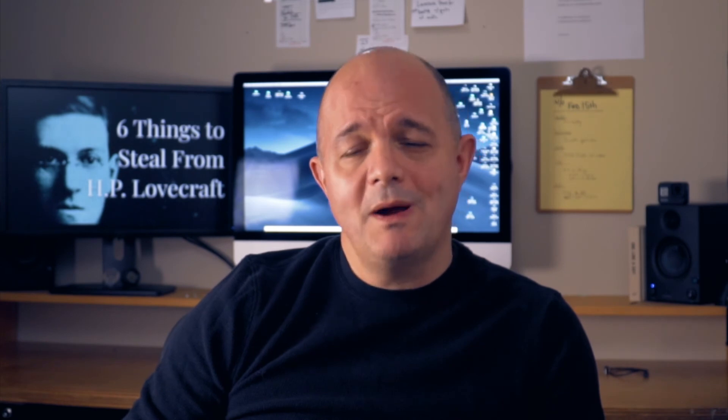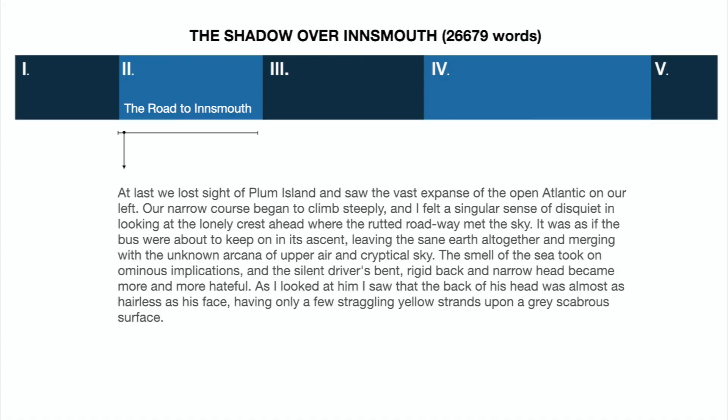Number five: Powerful images. In every Lovecraft story there are keyframe moments that stay with you. Some of this has to do with his being a disturbing and disturbingly talented visionary. But even if you're not a visionary, you can use powerful and specific images throughout your tale. Here's one of my absolute favorites from The Shadow Over Innsmouth: "At last, we lost sight of Plum Island and saw the vast expanse of the open Atlantic on our left. Our narrow course began to climb steeply, and I felt a singular sense of disquiet in looking at the lonely crest ahead, where the rutted roadway met the sky. It was as if the bus were about to keep on its ascent, leaving the sane earth altogether and merging with the unknown arcana of the upper air and cryptical sky. The smell of the sea took on ominous implications, and the slight driver's bent, rigid back and narrow head became all the more hateful. As I looked at him, I saw that the back of his head was almost as hairless as his face, having only a few straggling yellow strands upon a gray, scabrous surface."